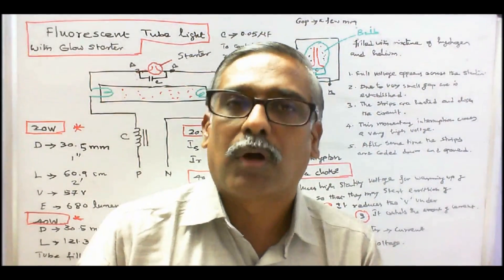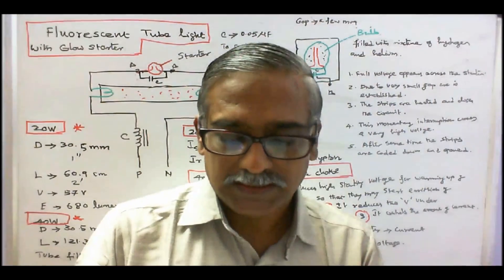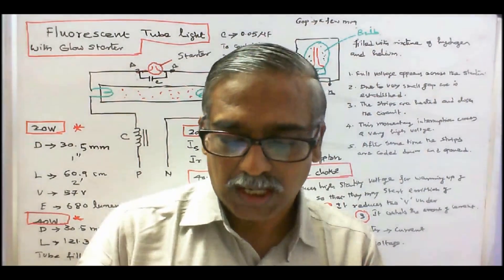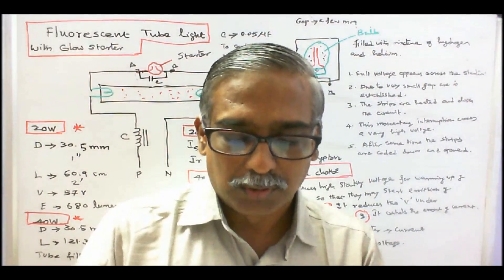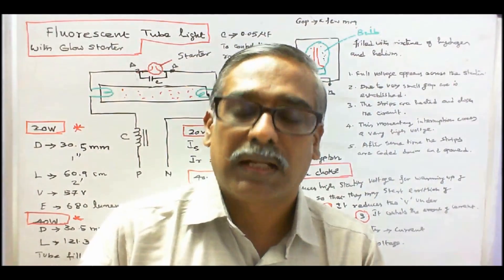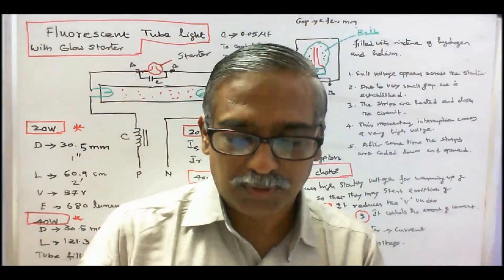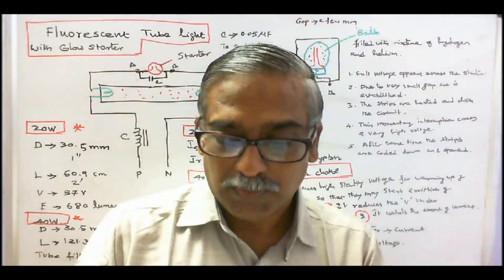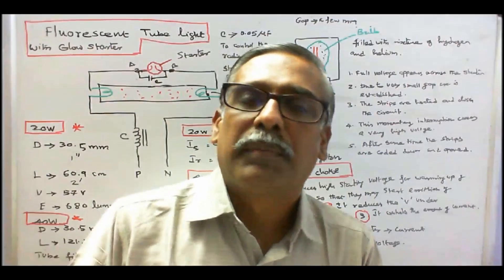They emit radiation of longer wavelength in the visible spectrum. Example, fluorescent tube light and a compact fluorescent tube light. Type 2, lamps which are emitting light of the same color as produced by the discharge. Example, sodium vapor lamp, mercury vapor lamp and neon tubes. This is what is meant by fluorescence.